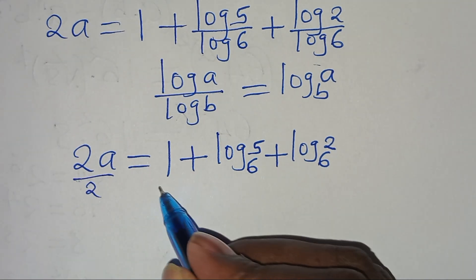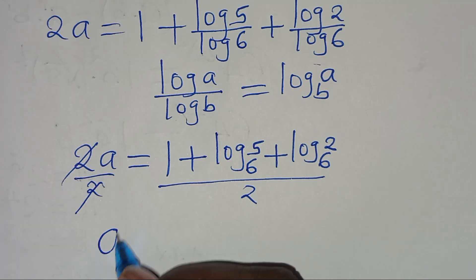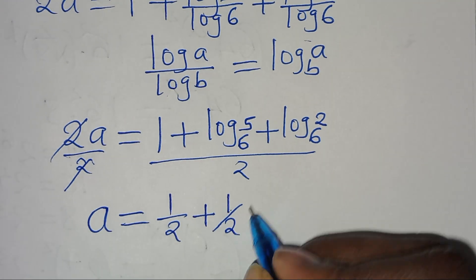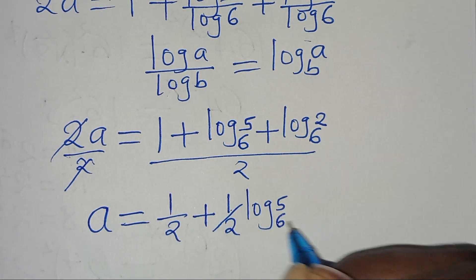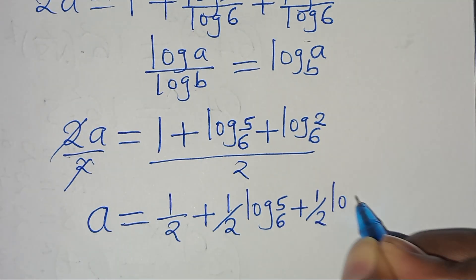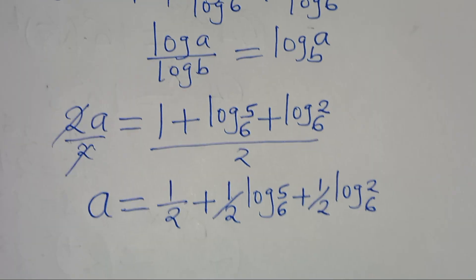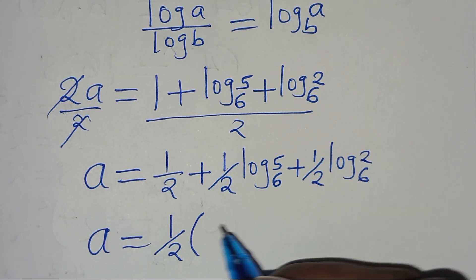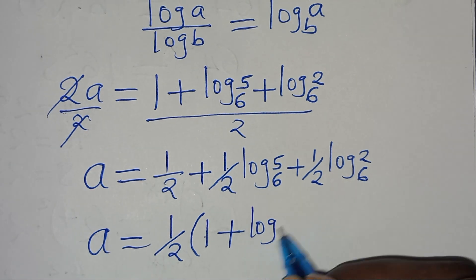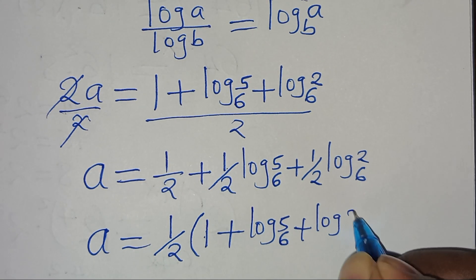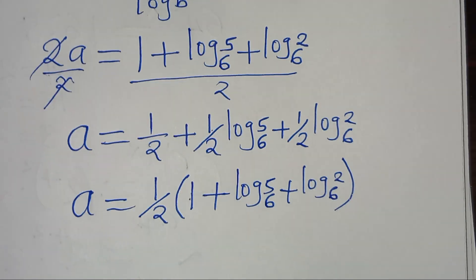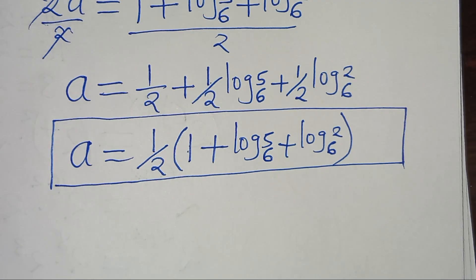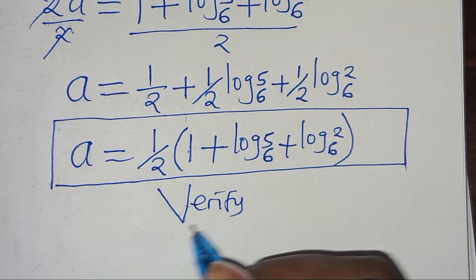Let's divide both sides by 2, so that we have the value of a equal to one half times (1 plus log₆5 plus log₆2). Since one half is common, we can factor it out: a equals one half into the parenthesis (1 plus log₆5 plus log₆2). This is the value of a. The next step is to verify that this value of a satisfies the equation.